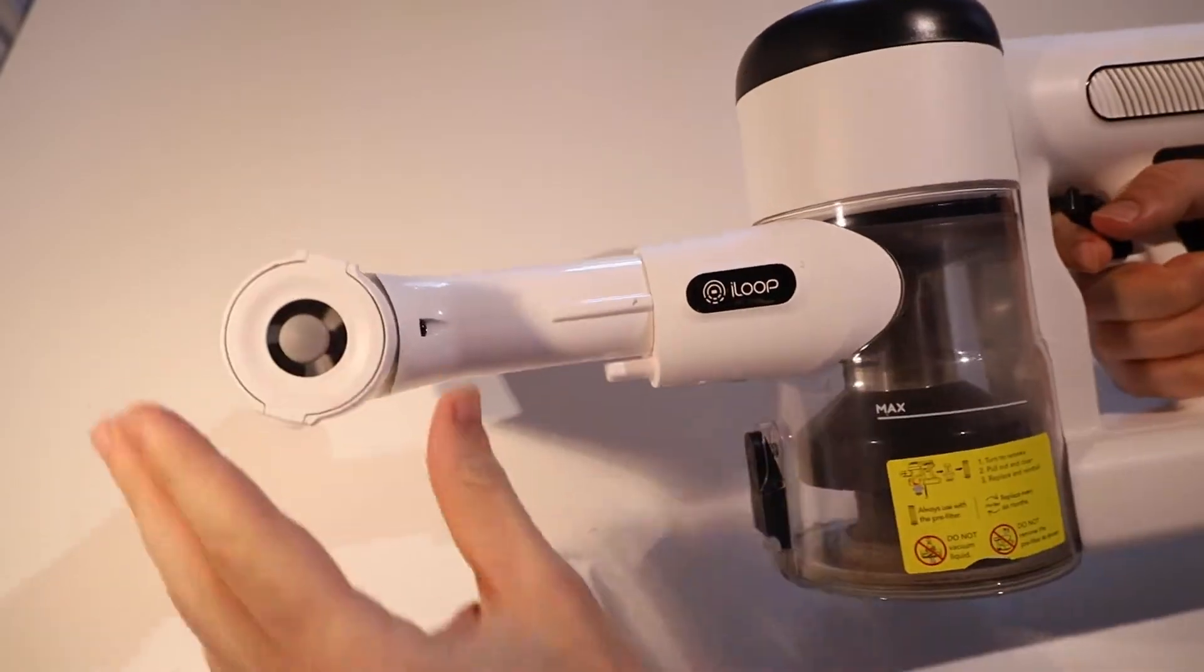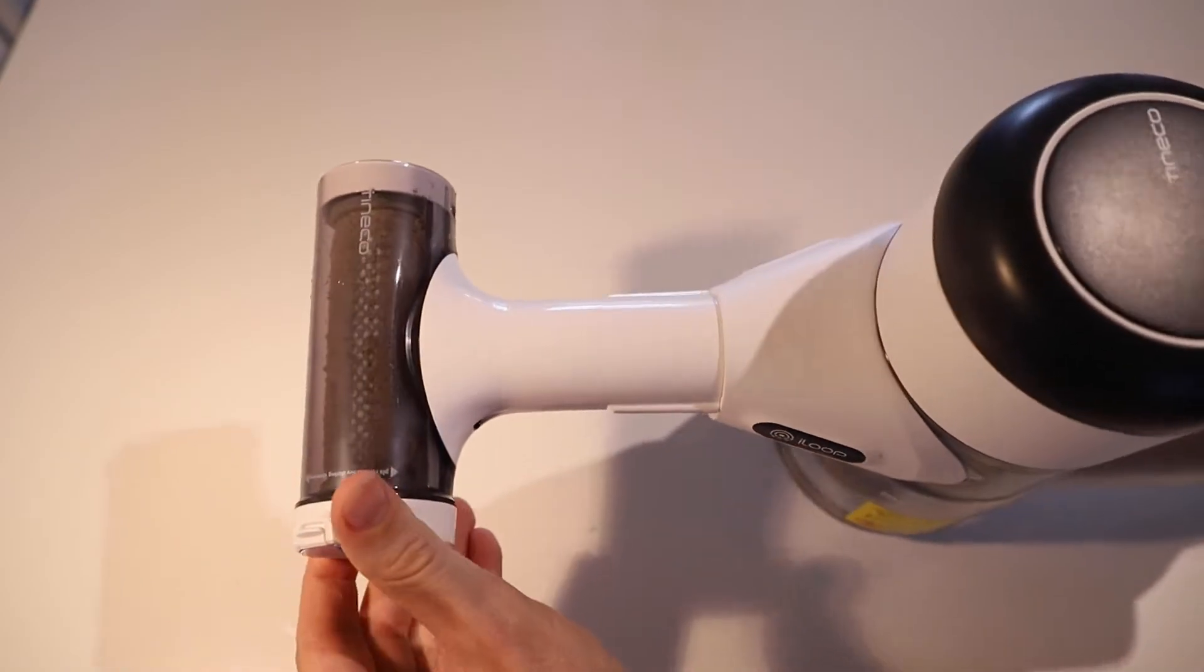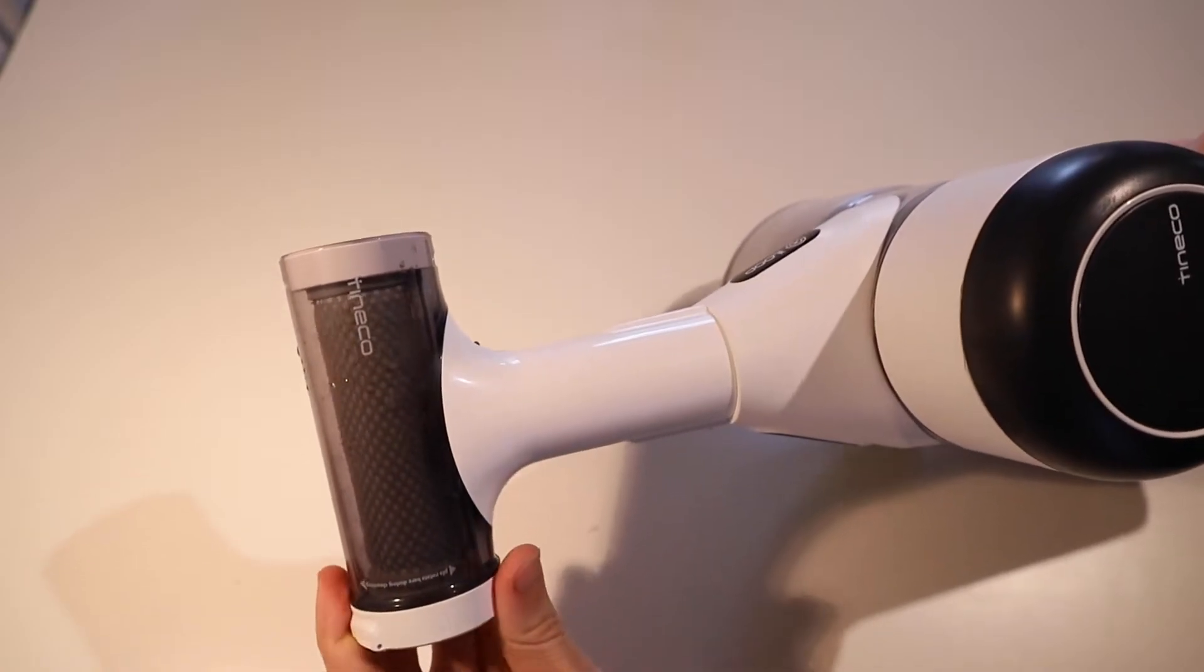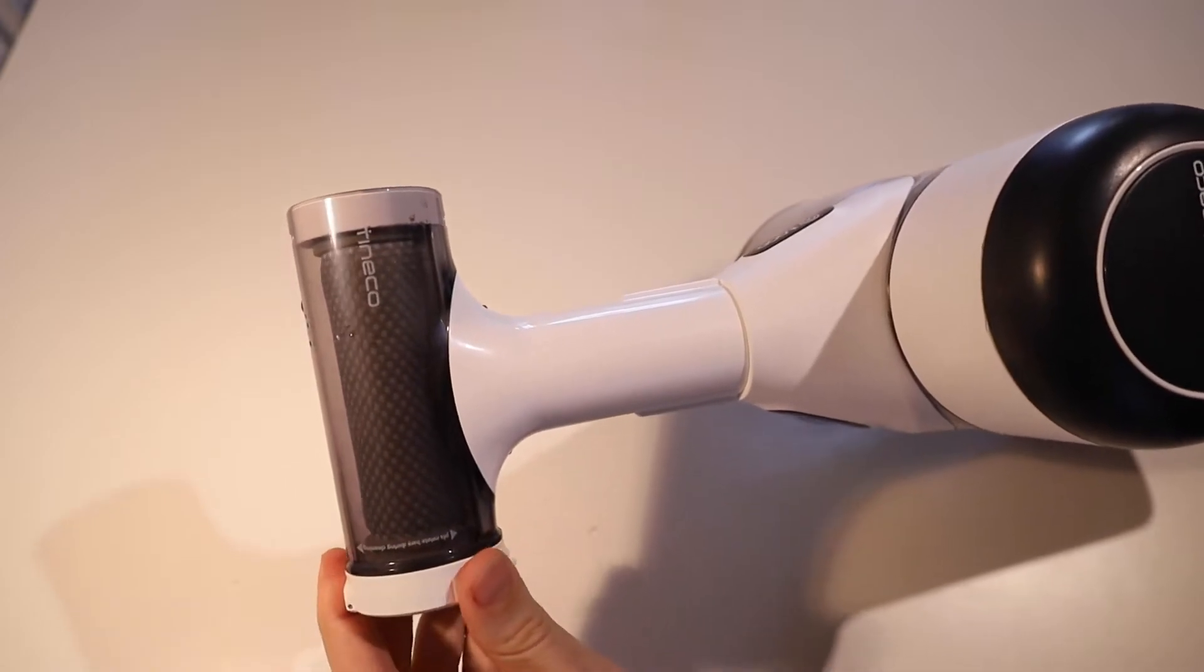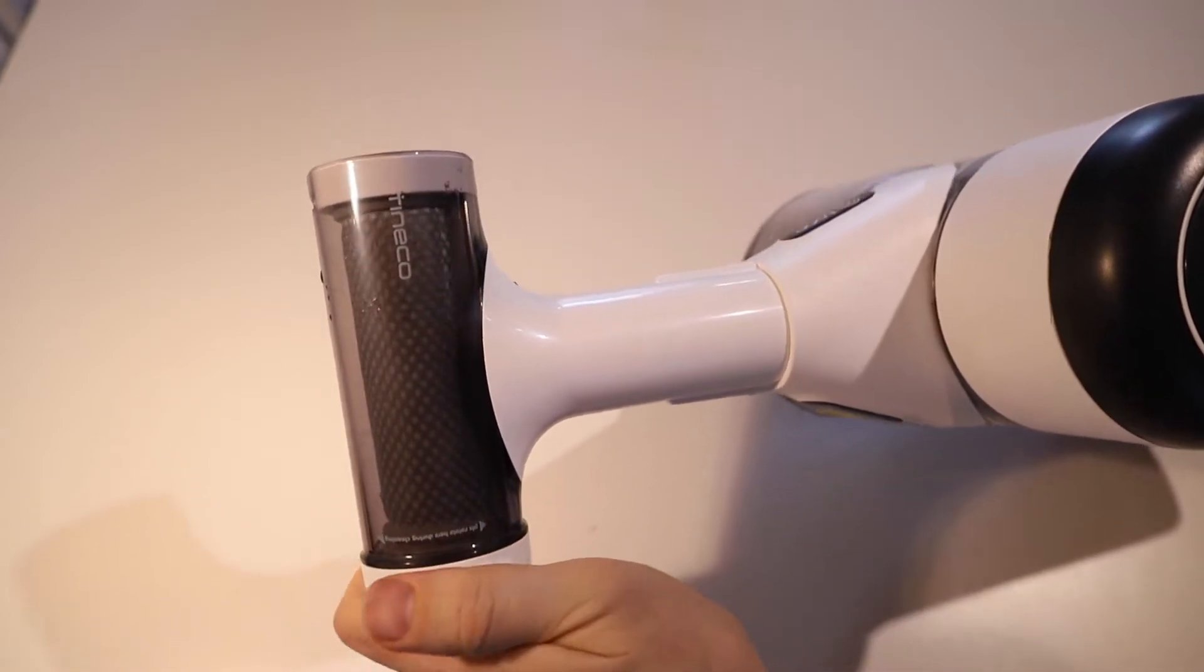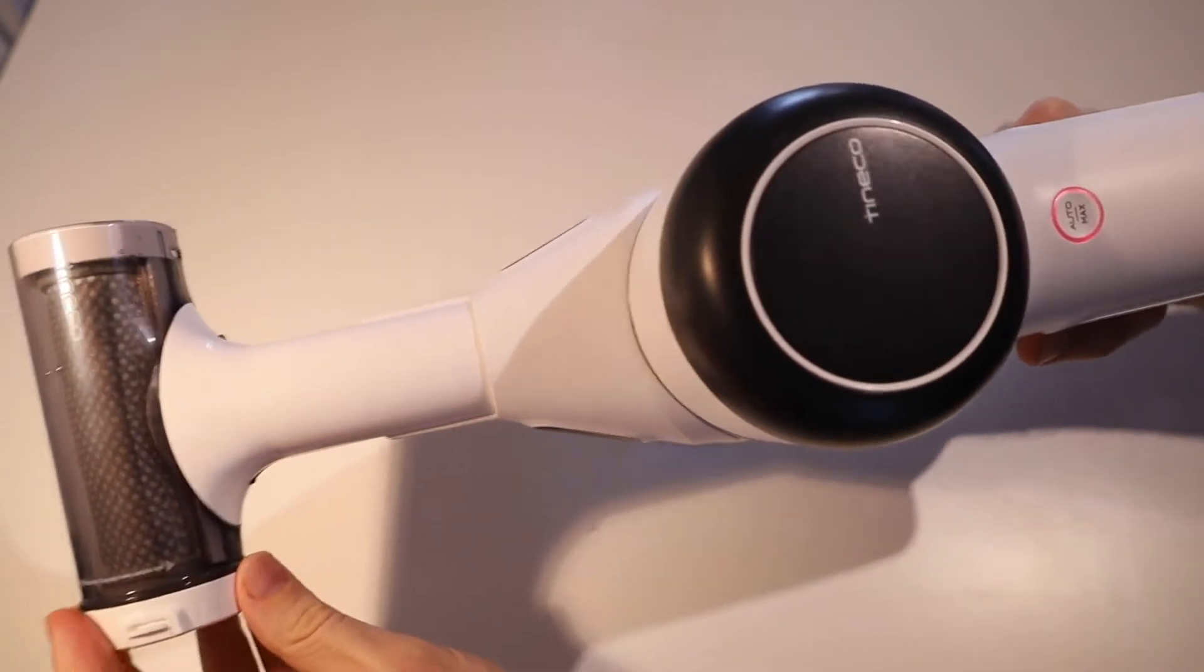And then what we're doing is turning the vacuum on and we're going to rotate the filter by twisting this end. So on and rotating the filter. And that should take most of it off and it should automatically jump into high power mode.